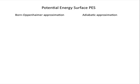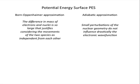The Potential Energy Surface stems from the Born-Oppenheimer and Adiabatic Approximations. The two are usually considered together. The first one is relative to the difference in mass of electrons and nuclei that is so large that it justifies considering the movements of the two species as independent from each other. The Adiabatic Approximation states that small perturbations of the nuclear geometry should not influence drastically the electronic wave function.